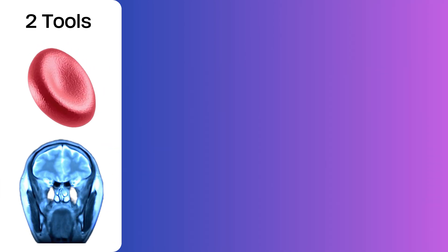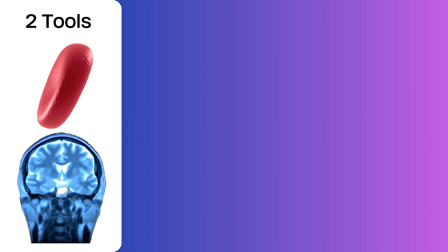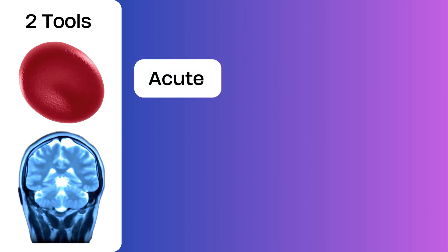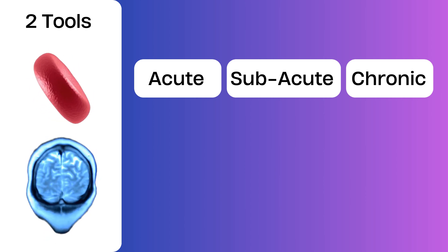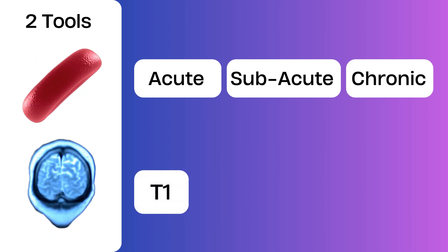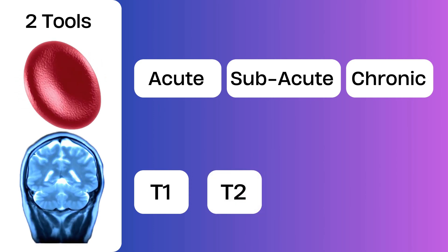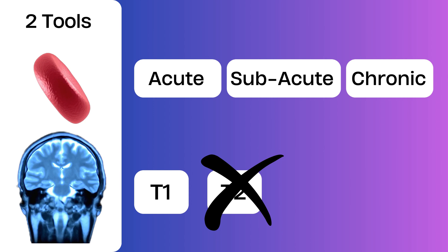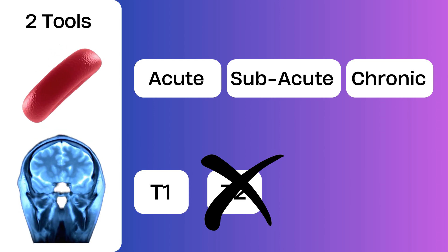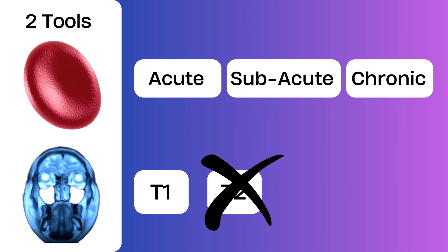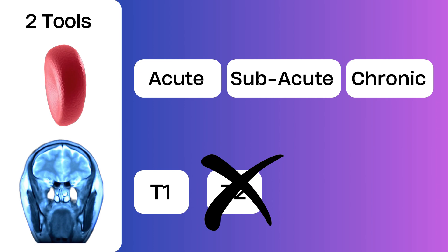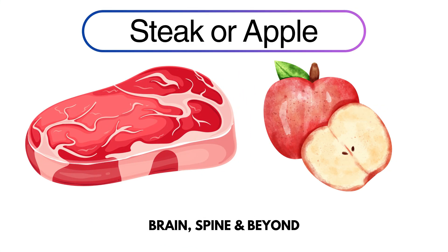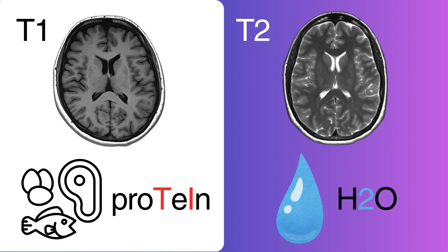In this algorithm we will use two tools. First, blood — assessing different ages: acute, subacute, and chronic. Second, on MRI imaging we will use T1-weighted images. You don't actually need T2, because T2 only tells you the sub-stage within each phase, and in real life that's not necessary. We also need one more tool: a steak. If you are vegetarian, you can use an apple. One important fact: T1 loves protein — remember that by the T in protein — while T2 loves water, remember that by the two in H2O.